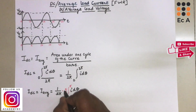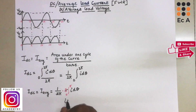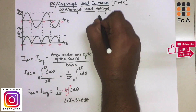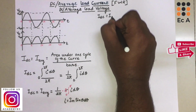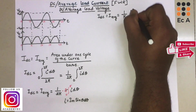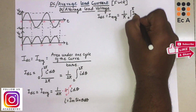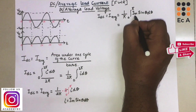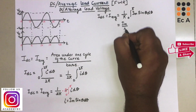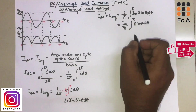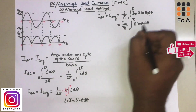We can cancel the 2 in the numerator and denominator. We know I = Im·sinθ dθ, so substituting this value in the above equation we get IDC, which is the same as I average, equal to (1/π) × integration from 0 to π of Im·sinθ dθ. We can take Im outside the integration: (Im/π) × integration from 0 to π of sinθ dθ.